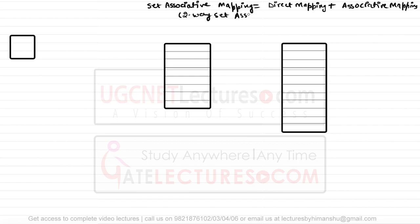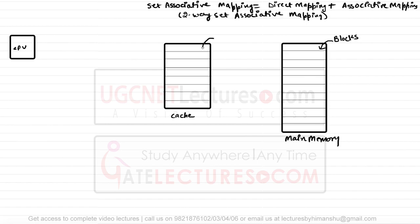We are studying two-way set associative mapping. Consider here: assuming this is the CPU, this is the cache memory, and this is the main memory. The main memory is divided into blocks and the cache memory is divided into lines. The size of the main memory is 128 words and the size of cache memory is 64 words.